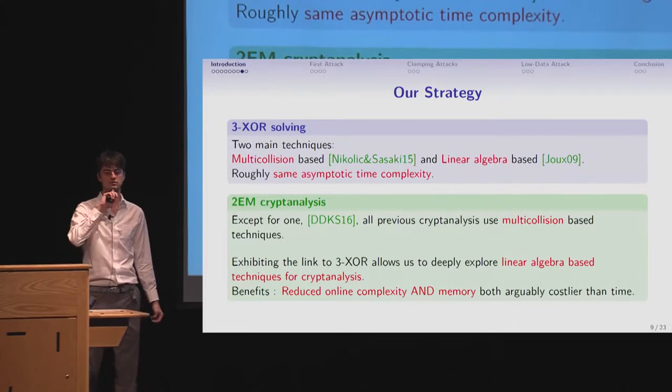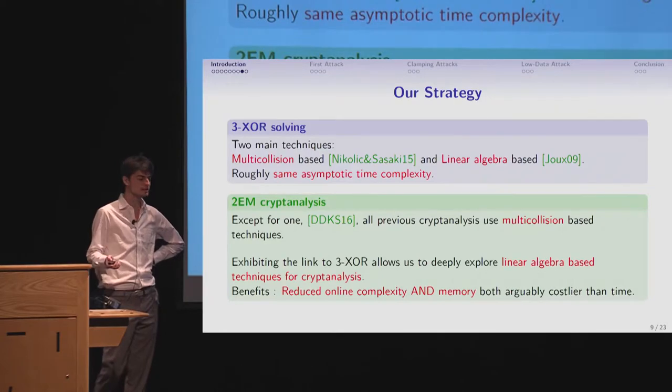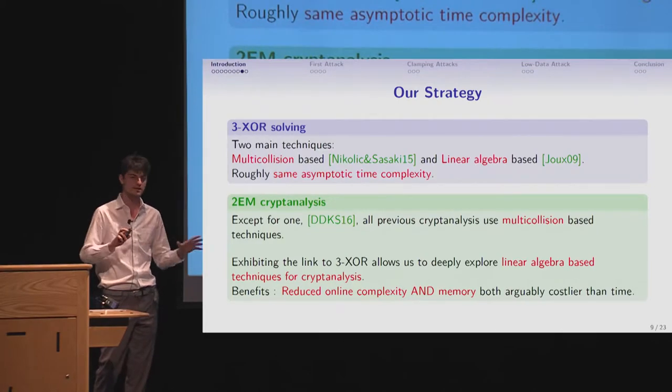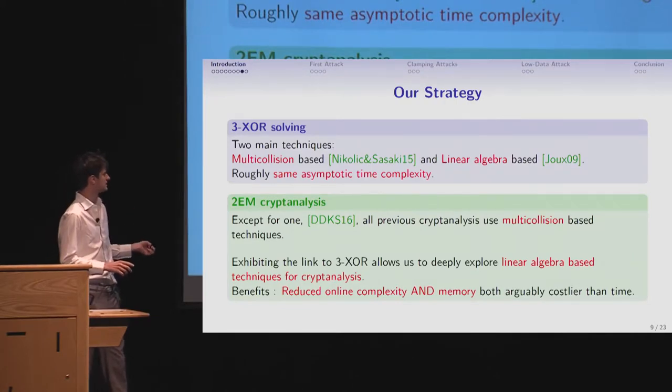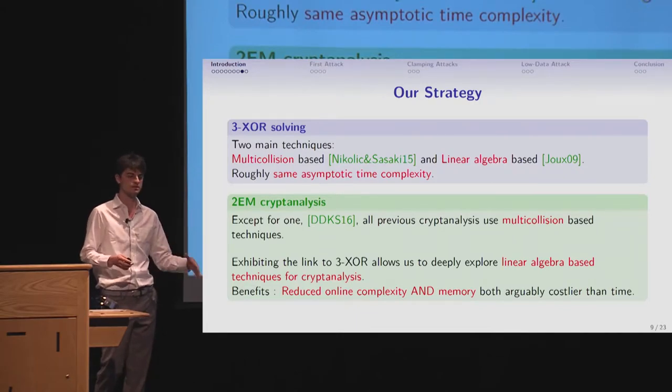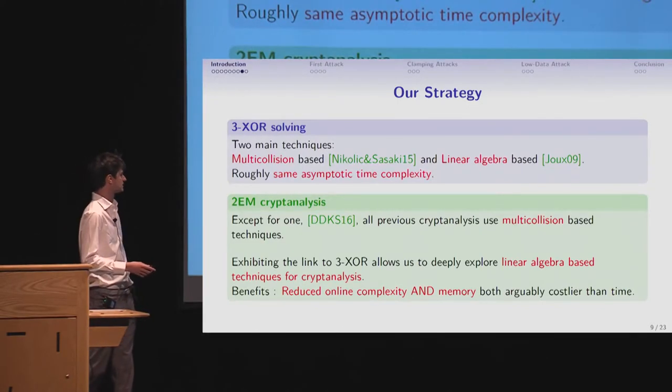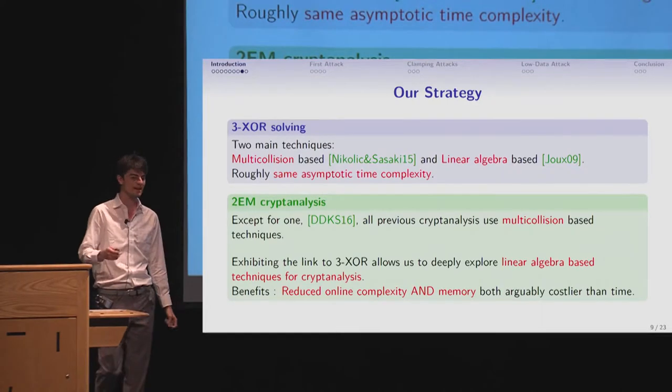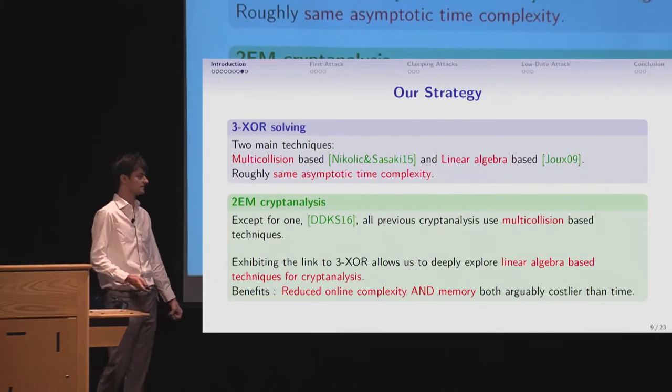And they have roughly the same asymptotic complexity, though combining them seems really not trivial. But you have it. On the other hand, in the two round Even-Mansour cryptanalysis literature, except for one case, one exception, all previous cryptanalyses use multi-collision-based techniques. Even without knowing the links between the 3-XOR and this cryptanalysis, nearly every one of them use multi-collision-based techniques. And so now that we have these links, we kind of want to explore more deeply what we could do with linear algebra-based techniques for cryptanalysing this two round Even-Mansour.